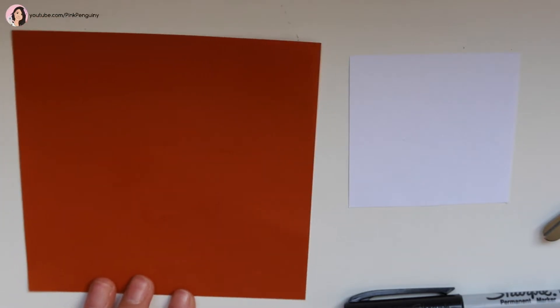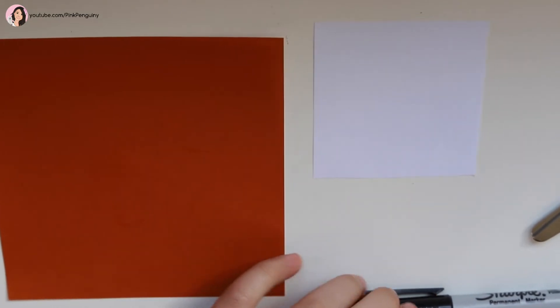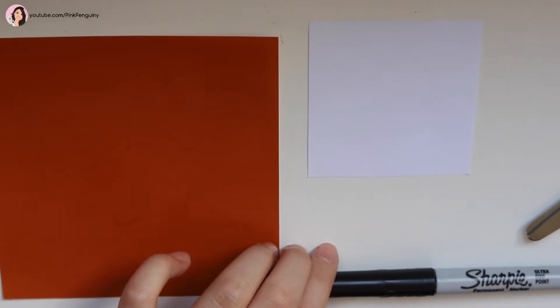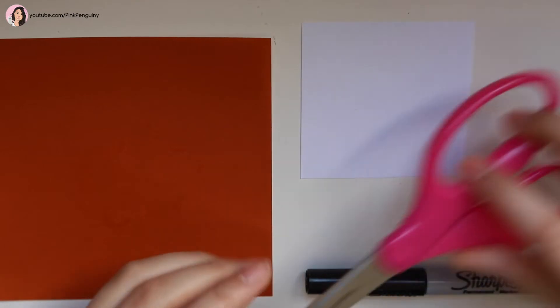The supplies you'll need are a brown piece of origami paper, a small piece of white paper, a writing utensil or drawing utensil, and some scissors.